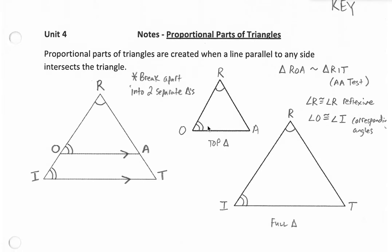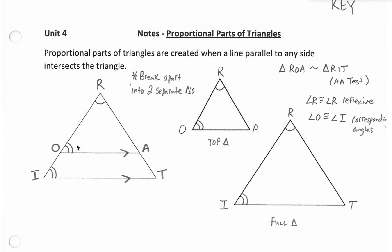So to start off with here we have a triangle. If we draw a segment inside the triangle that is parallel to either of the sides, for example here we drew a line that's parallel to the bottom of the triangle, then we are creating proportional parts in this triangle.